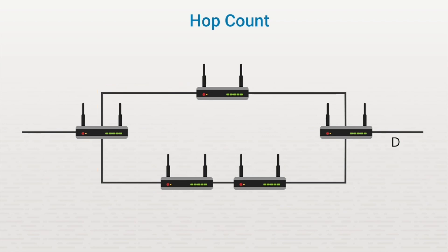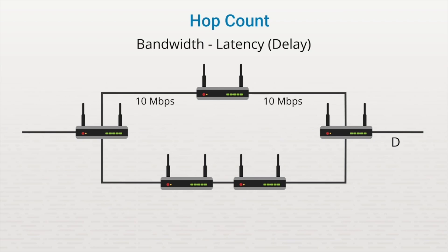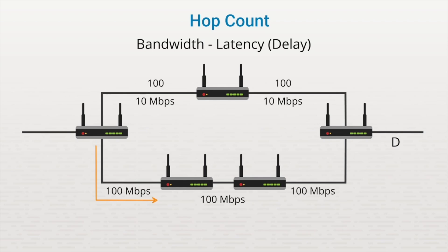Another metric that can be used is based on bandwidth, or sometimes latency or delay. These both measure how fast a message is sent from source to destination. Say this router has 10 megabits per second links, and these routers down here all use 100 megabits per second links. It would be faster to send the information in this direction rather than across the slower links. If the routing protocol was using the hop count, it would prefer the shorter route to the destination, even though it's slower. But when using bandwidth or delay as a metric, each link is assigned a relative cost value. For instance, these two links each have a value of 100, so the total cost going this direction would be 200. Down here, each link may have a metric value of 10, meaning that going this direction would only have a metric value of 30. The lower metric wins, so this router would use this direction when sending information to the destination network.